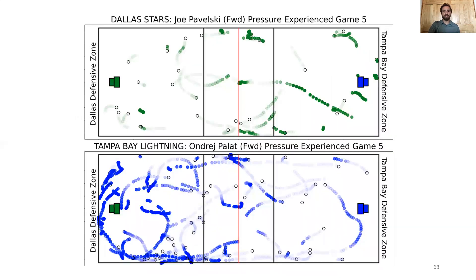Now consider some spatial results. We show every possession for Joe Pavelski on the top and Andre Palat on the bottom in our dataset, and shade the dots by how much pressure they experience, so that darker shades represent more pressure. The black circles represent the player gaining possession of the puck. Notice how these two players have extremely different playing styles: Pavelski tends not to skate with the puck in the offensive zone and can actually withstand a lot of pressure, while Palat tends to move around the attacking net and builds the pressure upon himself before moving the puck.